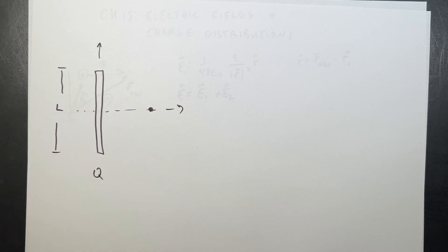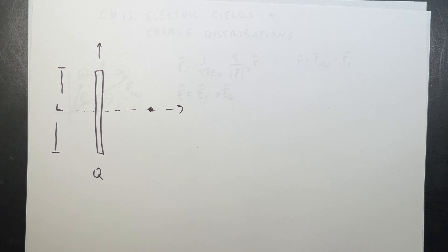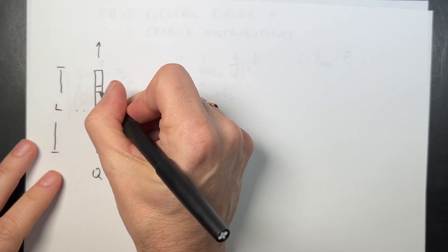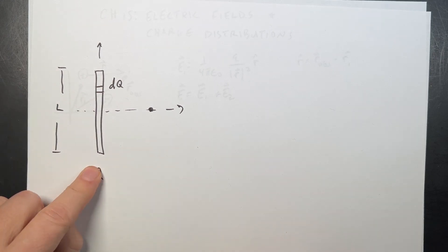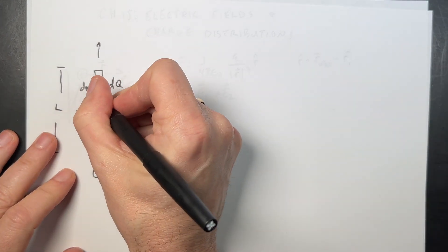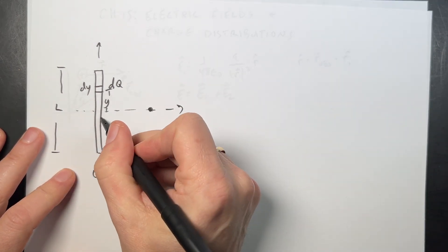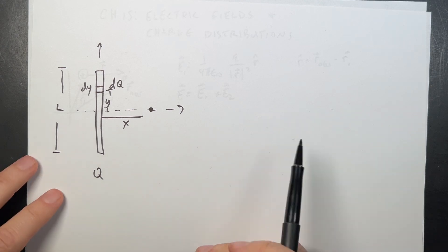If I've uniformly distributed charges over this rod, I could break it into a billion points and find a billion electric fields and add them up right there. And we will do that with a program. But we can do this in another way too, using calculus. And so here's where you actually get to use your calculus. So the idea is to break this rod into little segments. I can call that charge DQ. It's a little piece of the whole thing. And it has a width or length of DY. And it has a position of Y. And this observation location has a position of X.